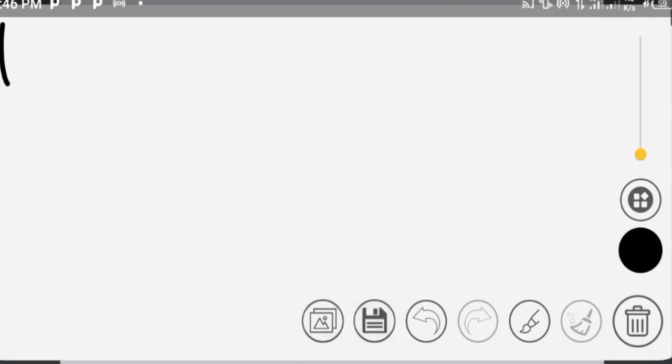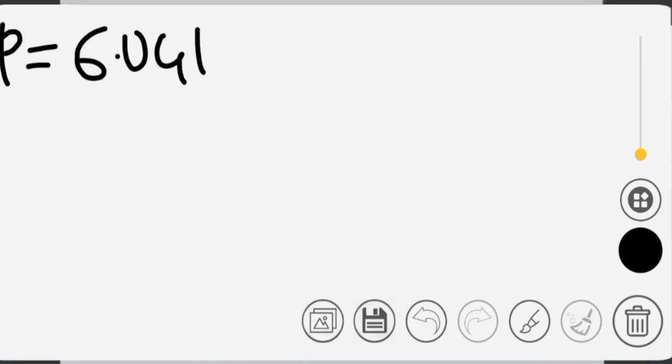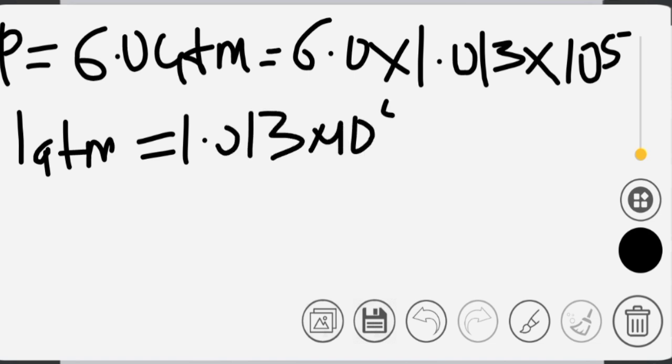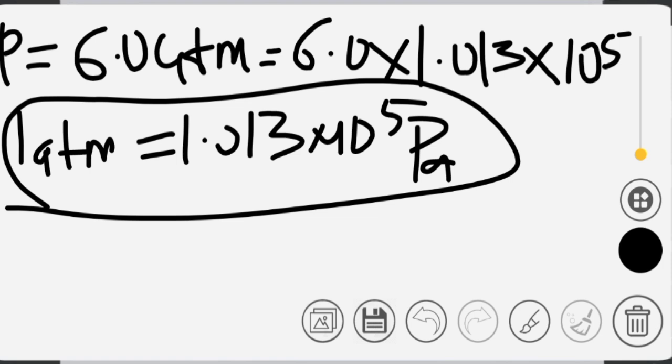The pressure will be equal to 6.0 ATM times 1.013 times 10 to the 5. These are to convert from ATM to pascal. So use the value to multiply 1.013 times 10 to the 5 pascal, because 1 ATM is equal to 1.013 times 10 to the 5 pascal. Now we move it to pascal.